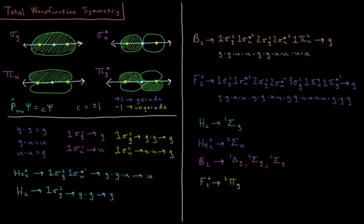For boron 2, we have 1σg² 1σu*² 2σg² 2σu*² 1πu². That gives g×g × u×u × g×g × u×u × u×u. If the number of u's is even, we get g; if odd, we get u. The result here is 6 u's and 4 g's, giving a net g. So boron 2 has term symbols singlet delta g, triplet sigma g, and singlet sigma g.